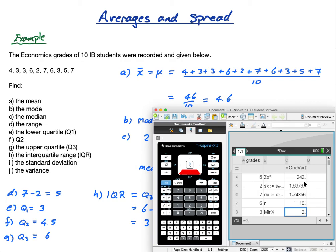N is the number of students. Minimum is 2. So it doesn't give me the range, but it gives me the min and the max. Q1, that's my lower quartile, it's 3. Median is 4.5, which I got. Q3 is 6, which I got. The max is 7, which we know. So that's all the kind of statistics it gives you.